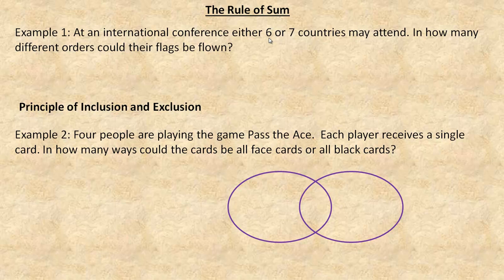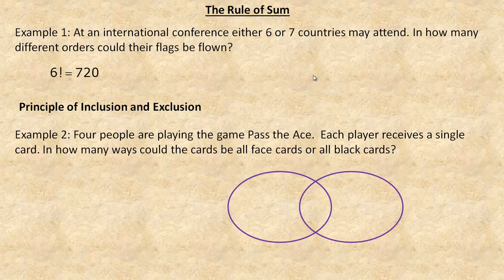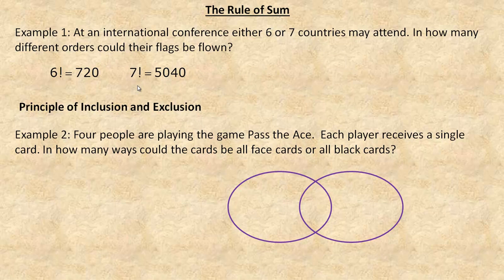If there were six countries attending, the flags could be arranged in six factorial ways. We could put six placeholders, and the first could be chosen in six ways, times five for the next, times four for the next, all the way down to the last flag. So we multiply six by five by four by three by two by one, which is six factorial — 720 ways. But if seven countries attend, the count becomes larger because the first flag can be arranged in seven ways times six times five, etc., which is seven factorial.